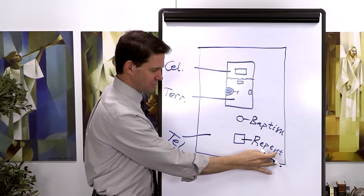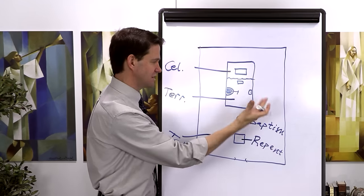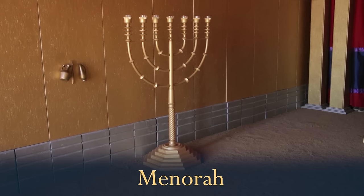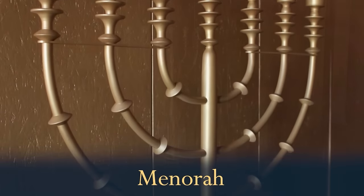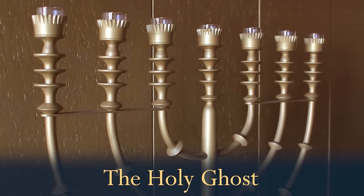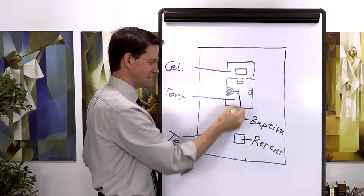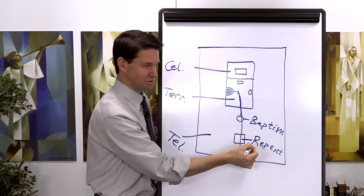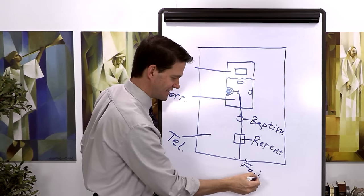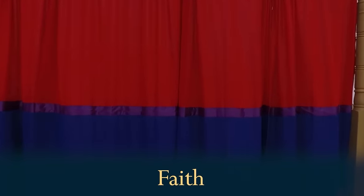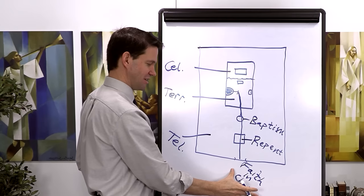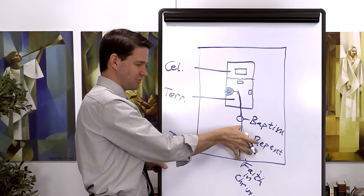Repentance and baptism—then cometh the gift of the Holy Ghost. The light of the seven candles on the menorah, the candelabra, is a nice analogy to the lamp unto our feet, the Holy Ghost being this light given to us. So we can now enter the tent and receive the gift of the Holy Ghost as we've worked through this process. Faith in Christ is what brings us to the altar to repent. We have faith in Christ, we repent, we get baptized, then we get the gift of the Holy Ghost.